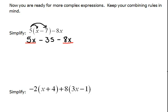So 5x and a negative 8x would be negative 3x and then we still have our minus 35 that can't be combined with anything. So our answer then is negative 3x minus 35.